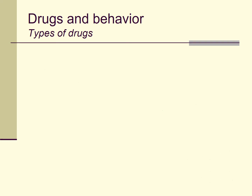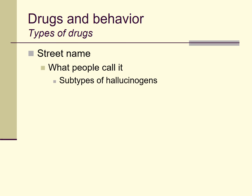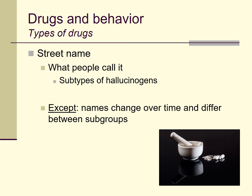One other way to classify drugs is by their street name — what people call them when buying drugs, especially illegal ones. We can look at subtypes of hallucinogens that are sometimes grouped together or given similar names. This works, except that those names change a lot over time. The slang people use to describe different drugs is an ever-evolving thing, so if we classified strictly by street names, we'd constantly be changing our classification system.